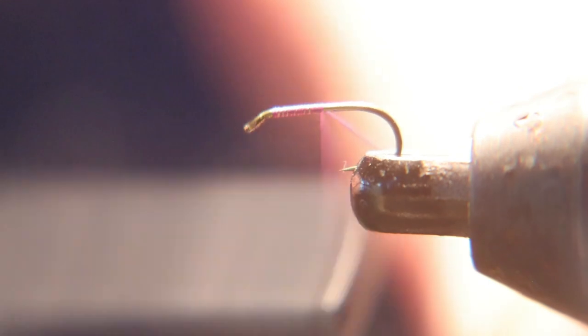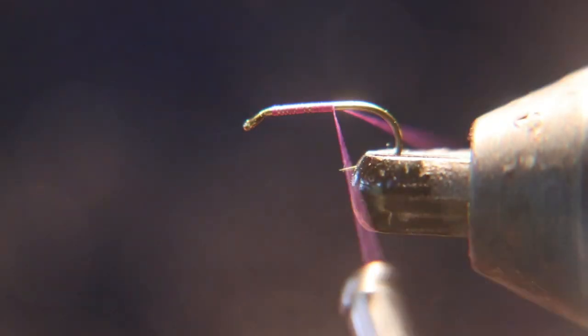We're going to start with 70 denier, purple or black thread. I had a dope bag, I couldn't find my black, so I'm using a really dark purple. I'm going to cover it up with dubbing anyway. It's a purple black thread.